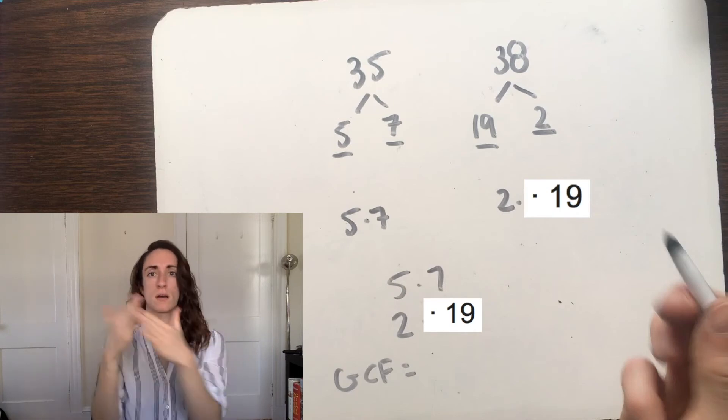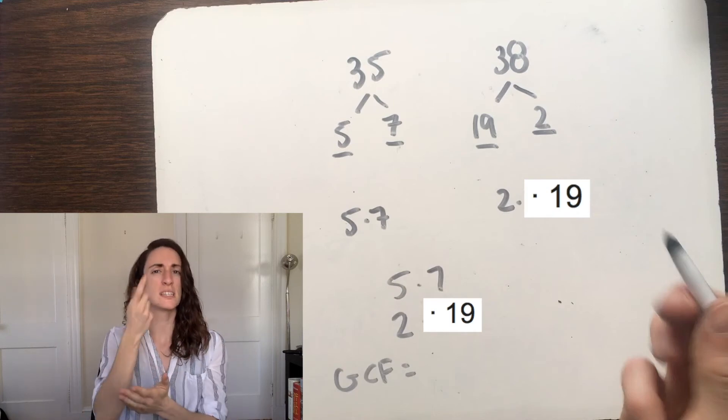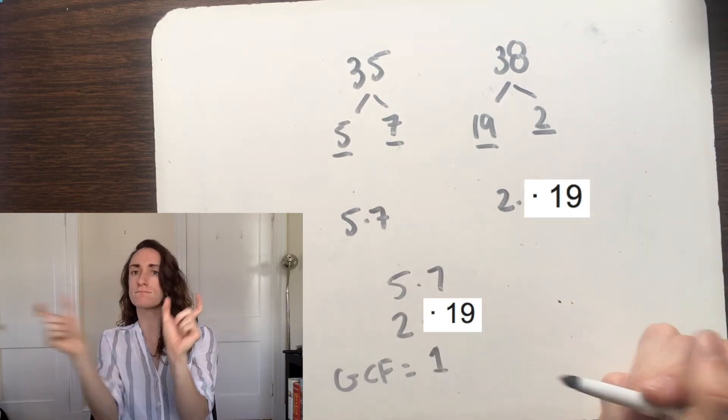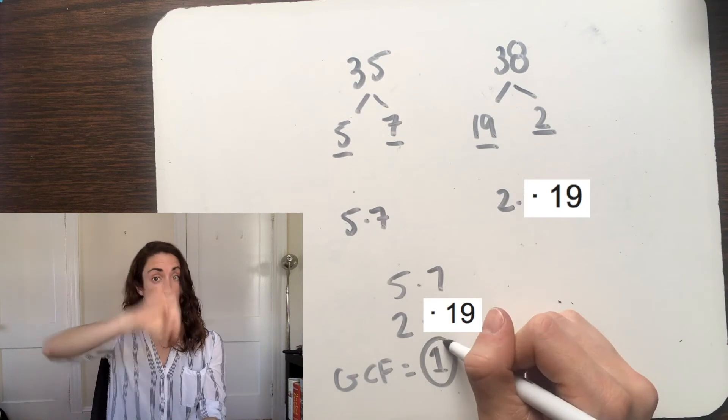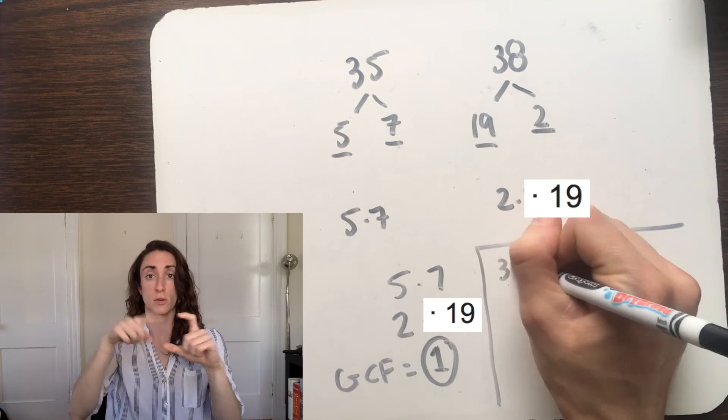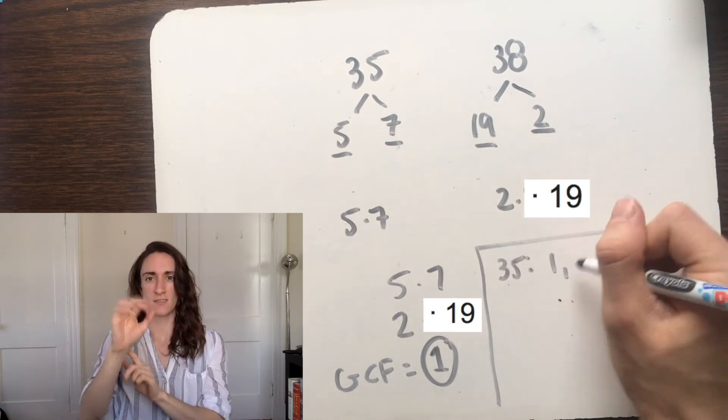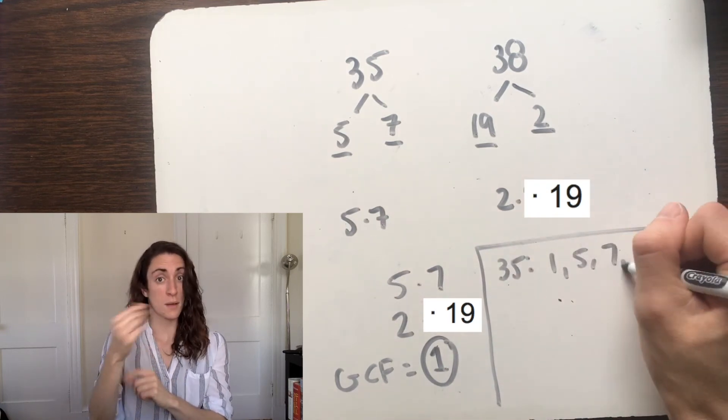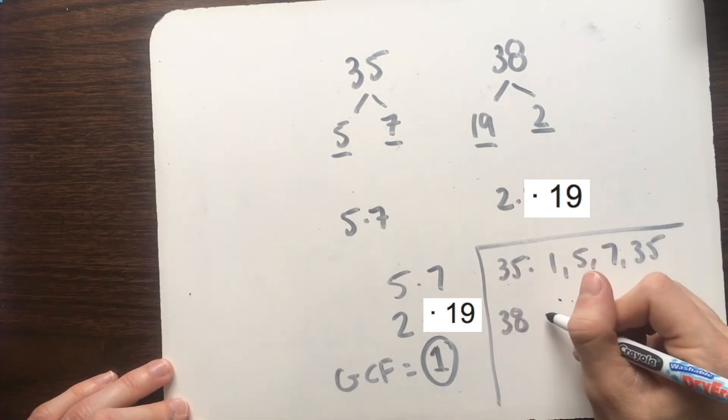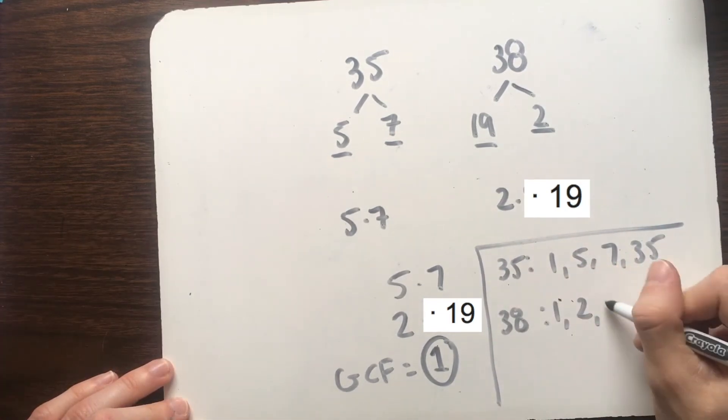Let's remember that the greatest common factor is the largest number that can divide both of these numbers. So the only number, the largest and only number, that can divide 35 and 38 is 1, and we can confirm this by listing out all the factors of 35 and 38. For 35, we have 1, 5, 7, and 35, and for 38, 1, 2, 19, and 38. The only, and thus largest, number that they share is 1.